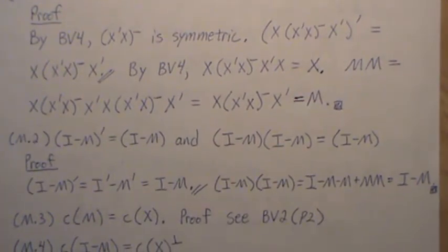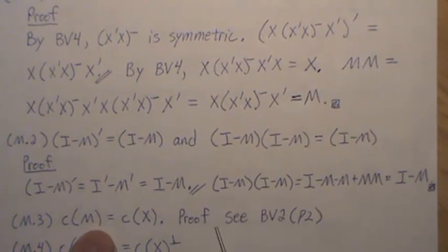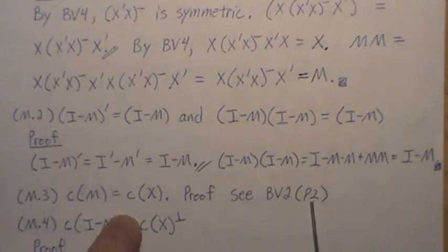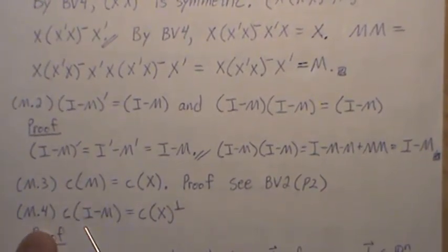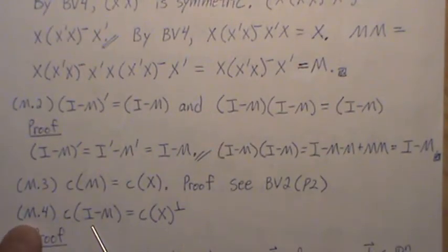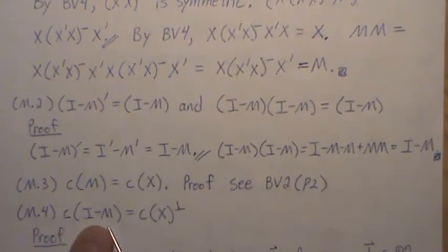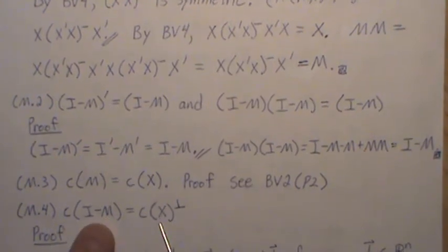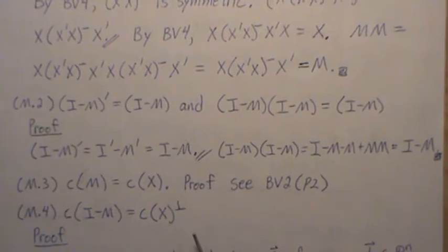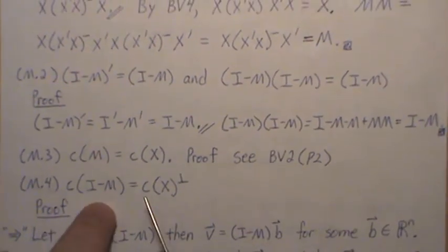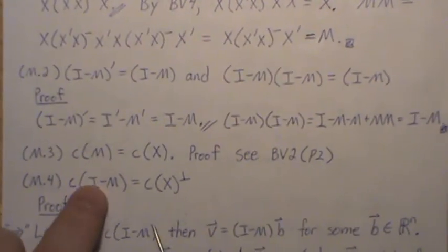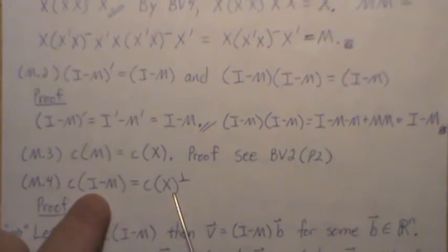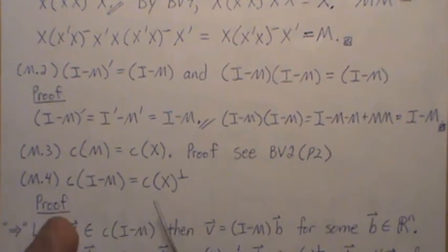We want to show that the column space of M equals the column space of X. For a detailed proof, see background video 2, property 2. To show two column spaces are equal, we show each is a subset of the other. We assume a vector is in one space and show it's also in the other, then vice versa — since they're both subsets of each other, they must be equal.